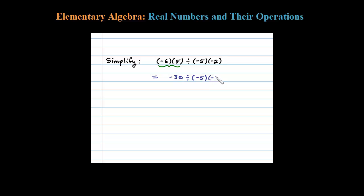If you do one operation at a time, you're less likely to make an error. Now remember, we're working these operations from left to right. So now we have to divide negative 30 by negative 5. When you divide two negatives, you get a positive number, in this case 6.